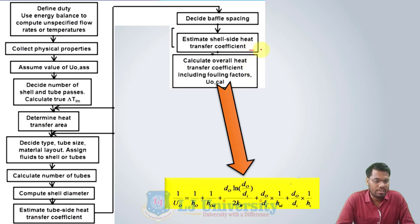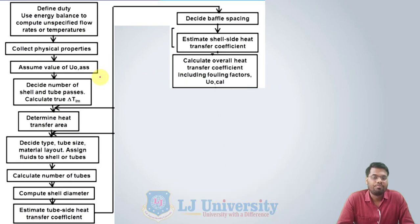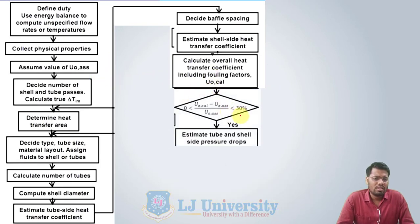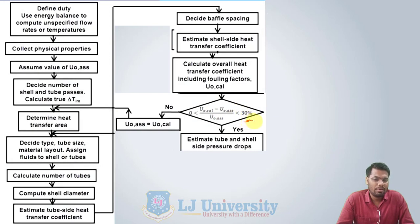After getting the shell side heat transfer coefficient, we can easily calculate the overall heat transfer coefficient including the fouling factor, using the equation discussed in the first chapter. We then compare this calculated overall heat transfer coefficient with the assumed overall heat transfer coefficient. If the value is within 30 percent, we can proceed further. If not within the allowable 30 percent, we have to change the assumed overall heat transfer coefficient based on the calculated value and repeat all the steps again.